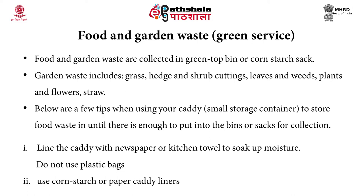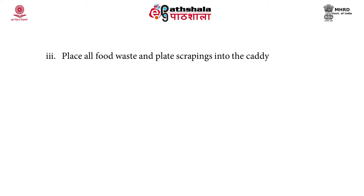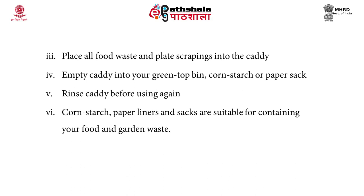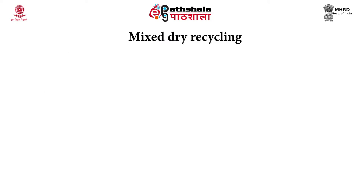Tips for storing waste in green bins: first, take a caddy — a small storage container. Line the caddy with newspaper or a kitchen towel so that it absorbs moisture; do not use any plastic bags. Place all food waste and plate scrapings into the caddy. When you empty the caddy into the green top bin, rinse the caddy before reusing it, and line it again with corn starch or paper liners to absorb moisture.